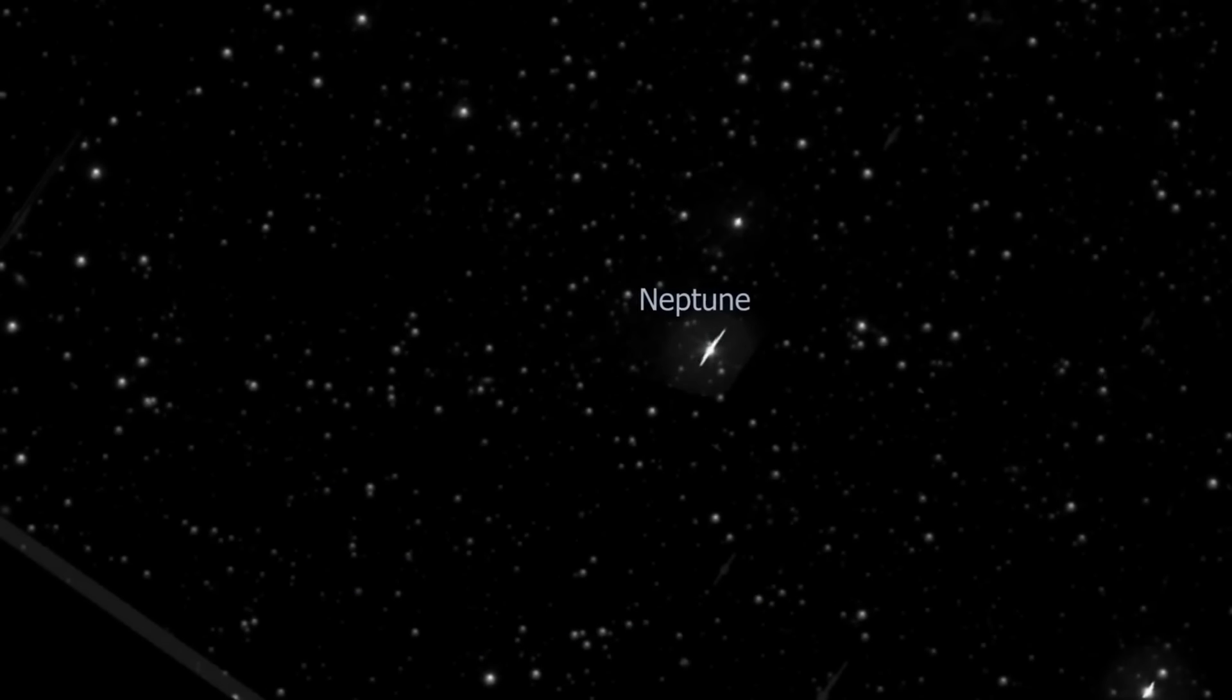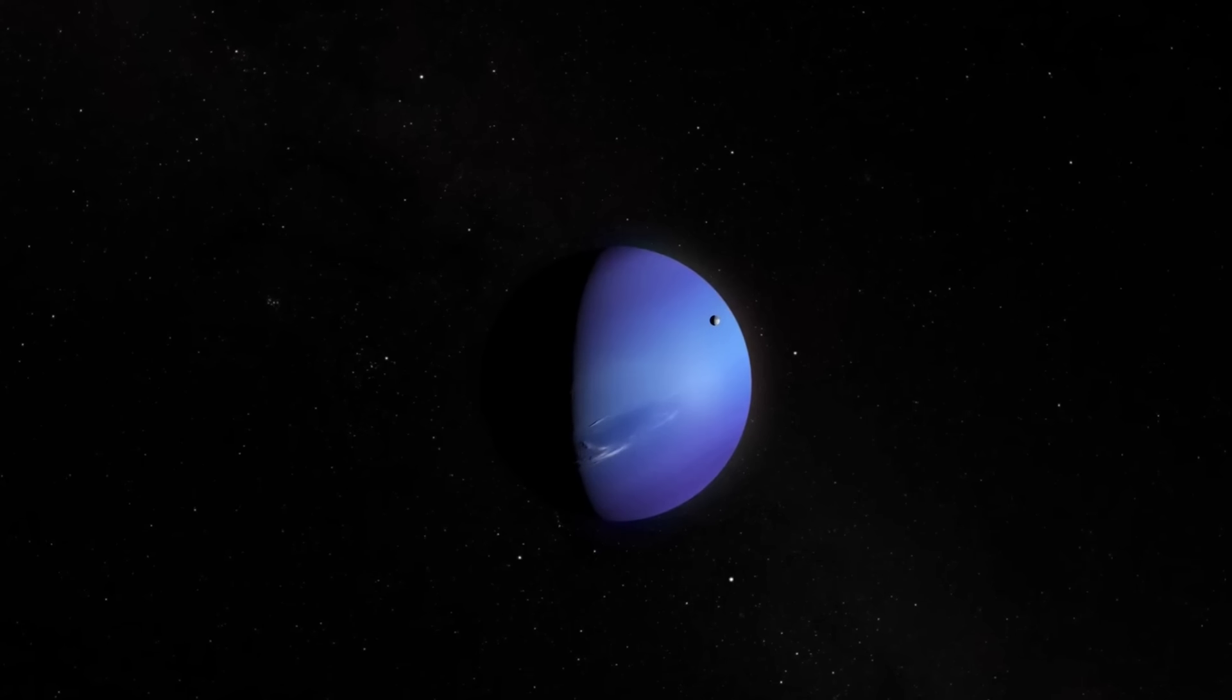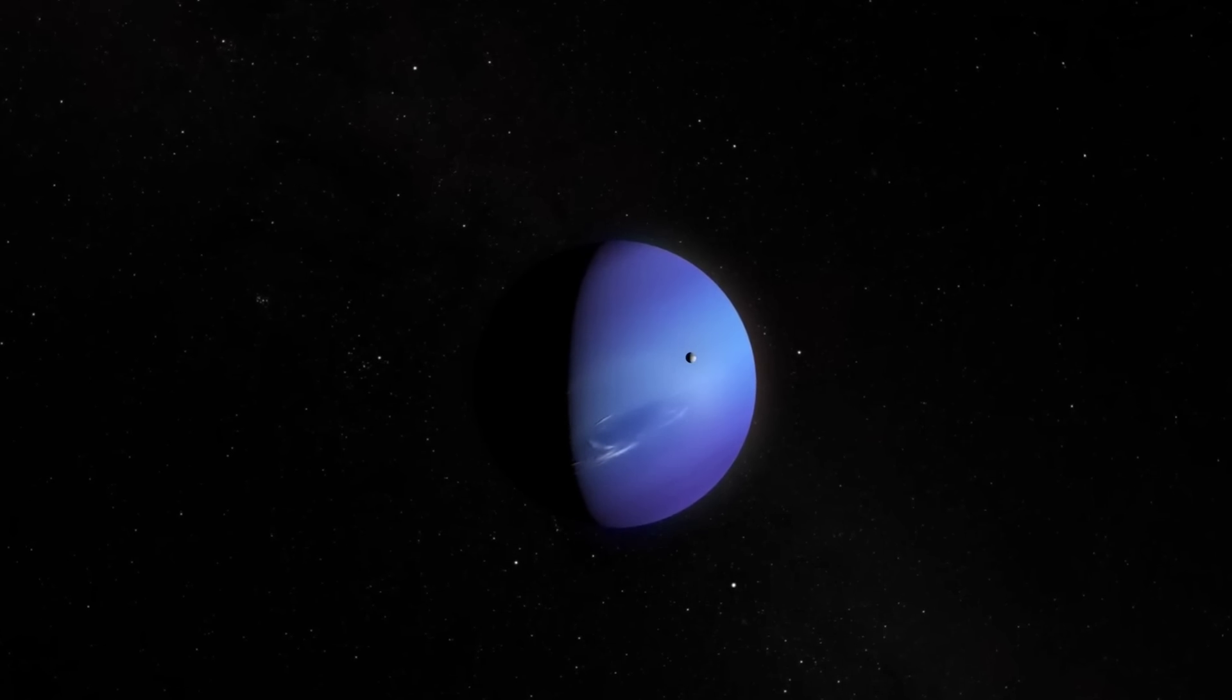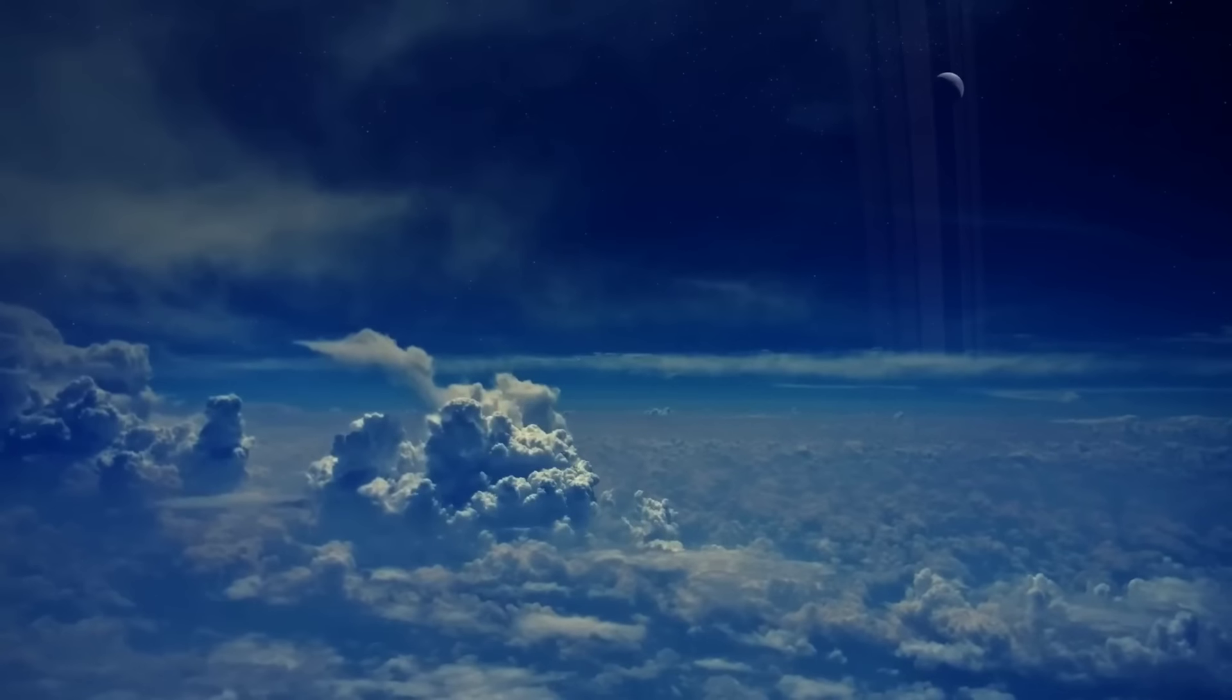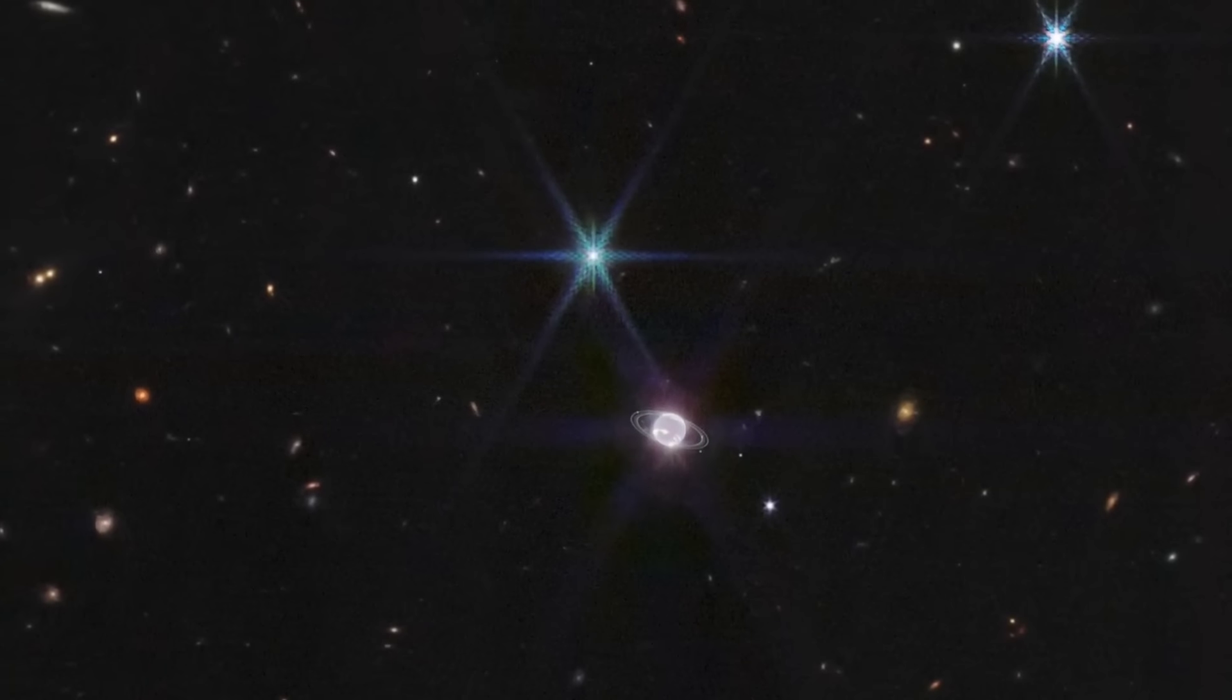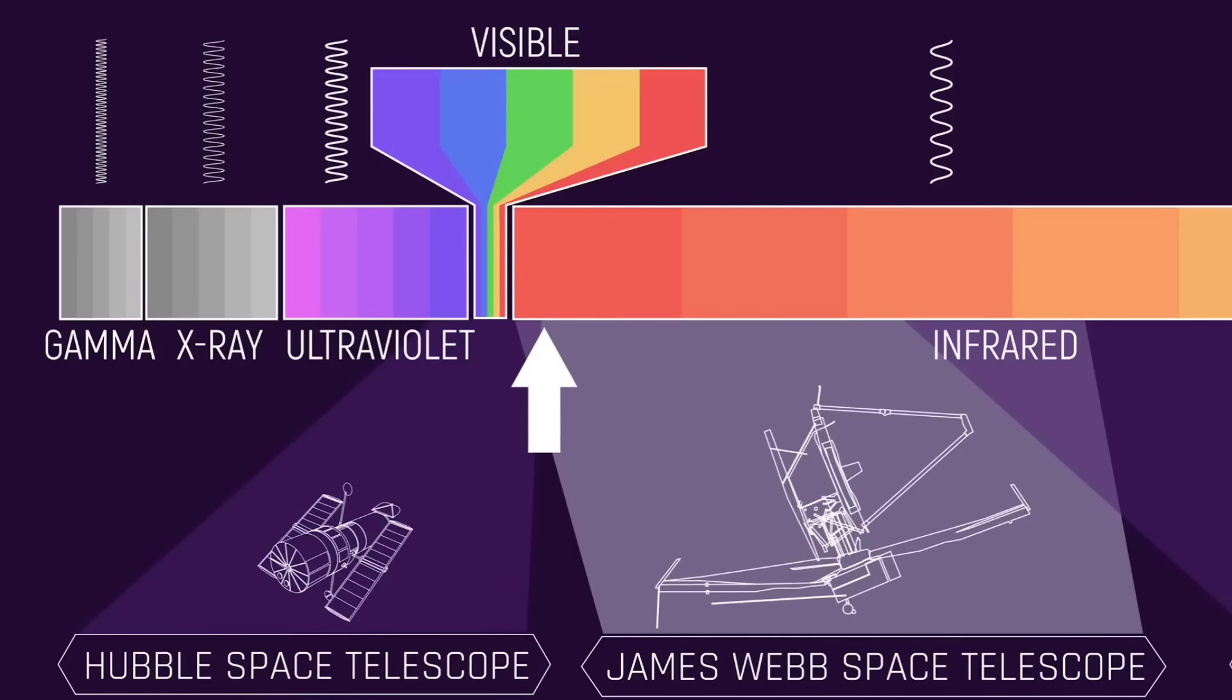Heidi Hamill, a Neptune system expert and interdisciplinary scientist for Webb, notes: It has been three decades since we last saw these faint, dusty rings, and this is the first time we've seen them in the infrared. Webb's extremely stable and precise image quality permits these very faint rings to be detected so close to Neptune.